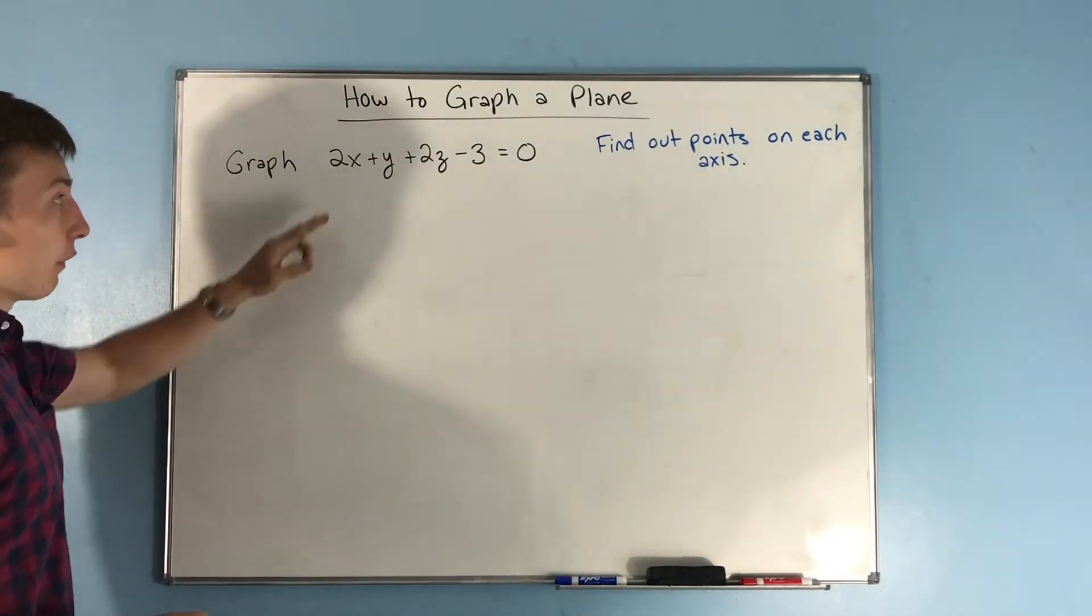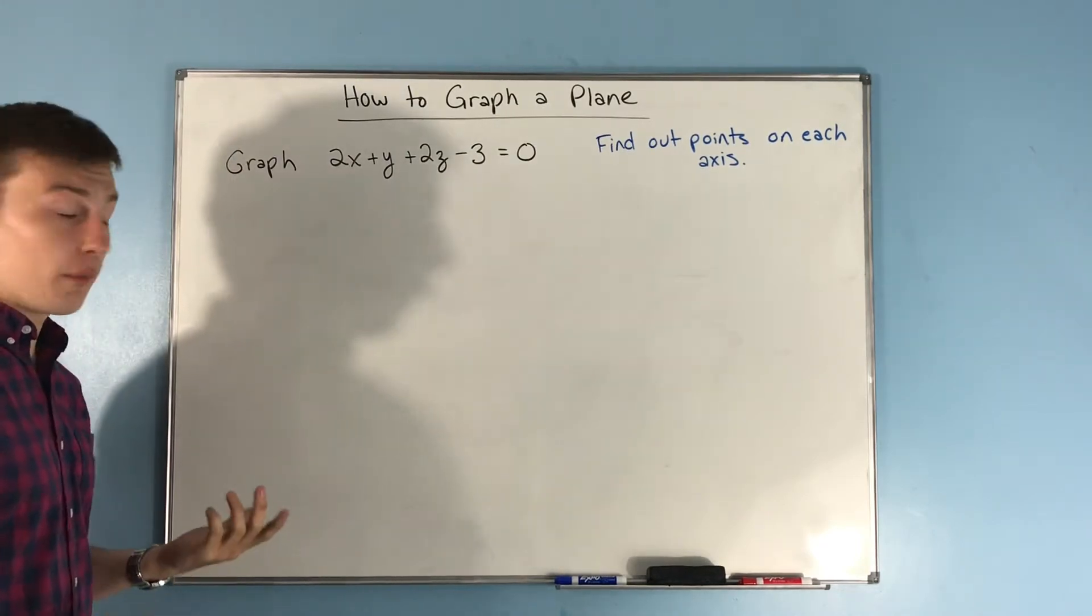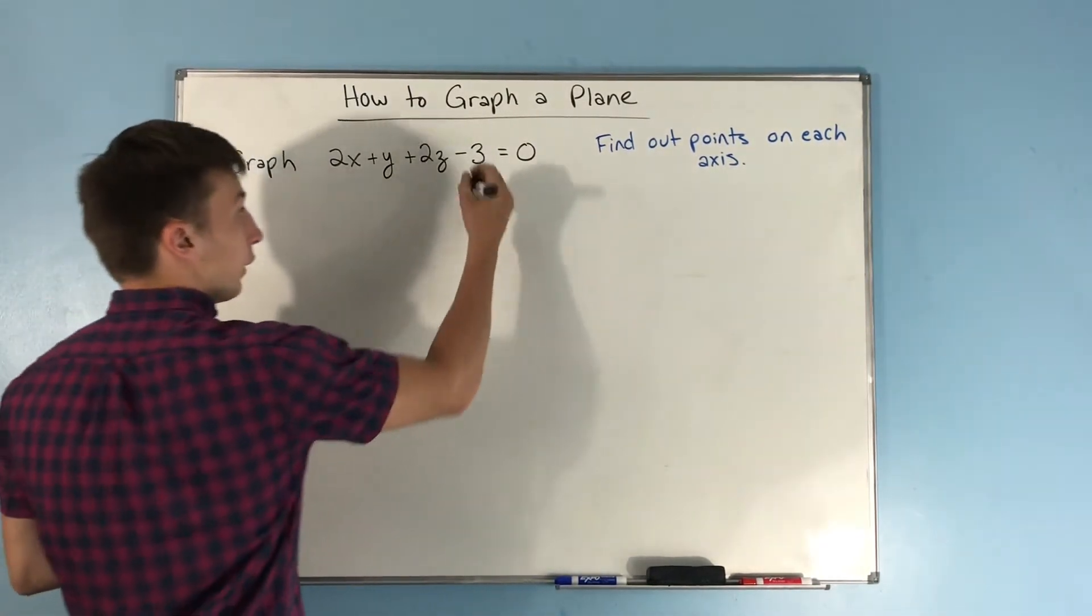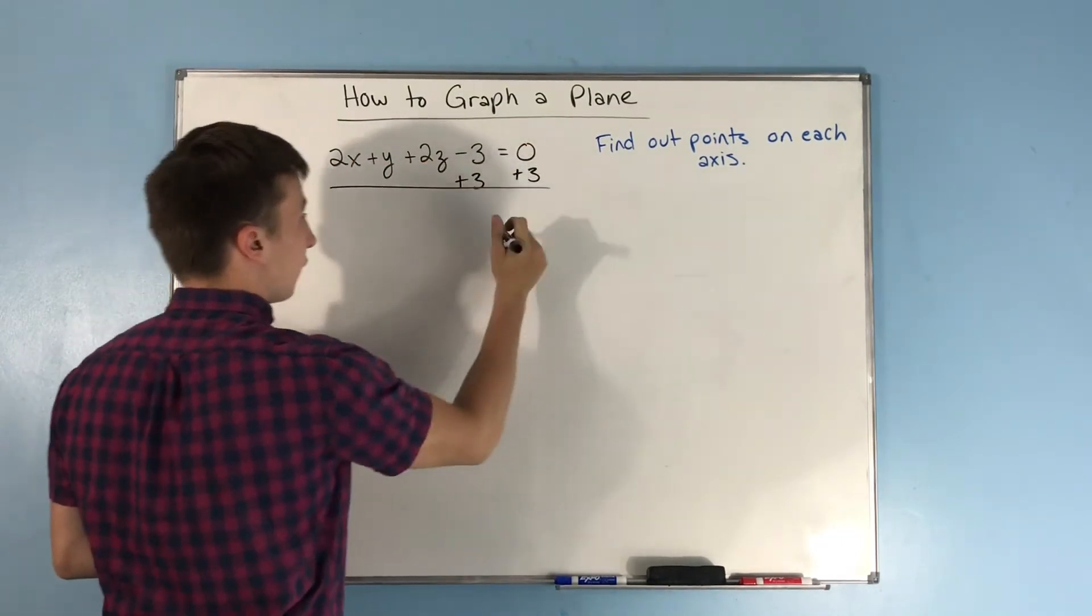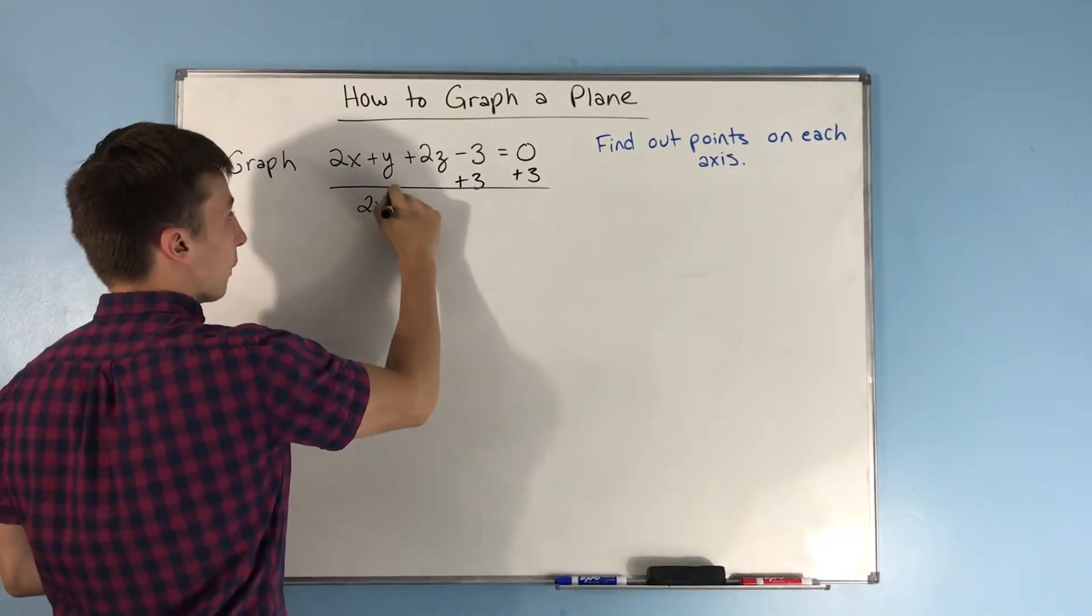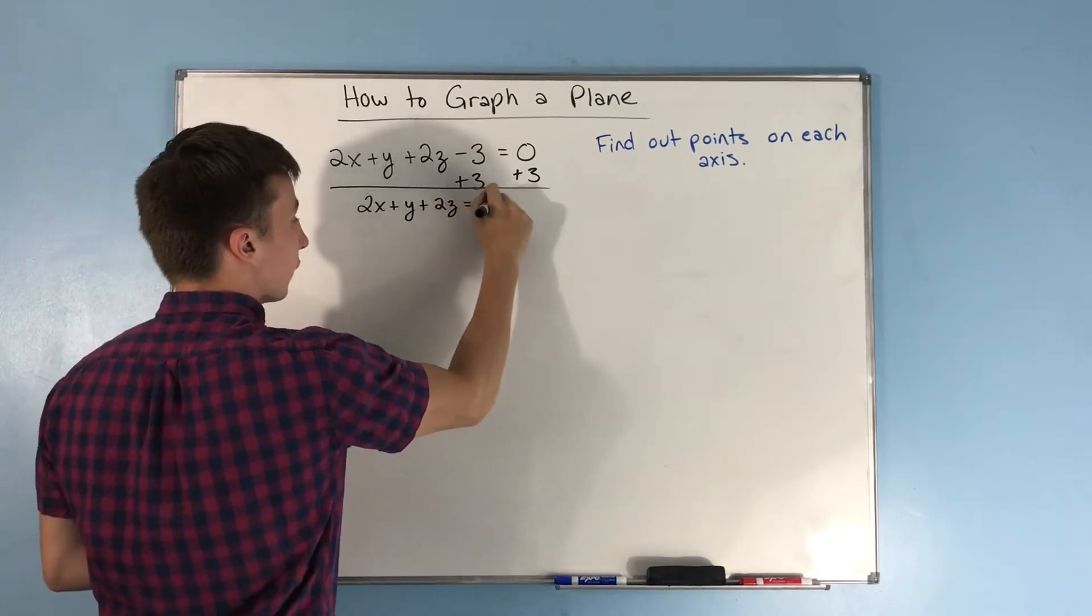So if we were asked to graph 2x plus y plus 2z minus 3 equals 0, first let's add 3 on both sides just to make this a little bit easier on ourselves. We get 2x plus y plus 2z equals 3.